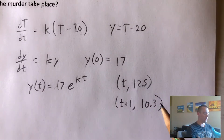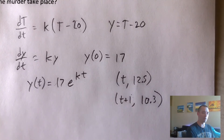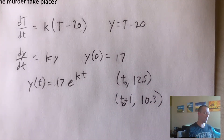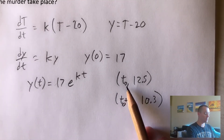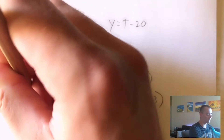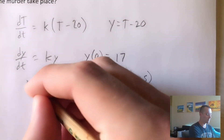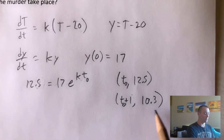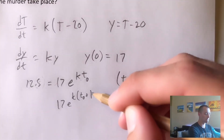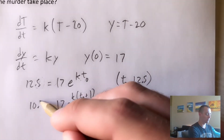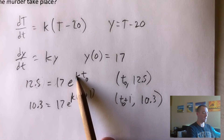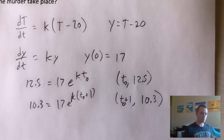Plugging each of these into Y(t) = 17e^(KT) gives us two equations. Plugging in T0 and Y equals 12.5: 12.5 equals 17e^(K·T0). Plugging in T0 plus 1 and Y equals 10.3: 10.3 equals 17e^(K·(T0+1)). We have two equations and two unknowns — K and T0 — so we should be able to solve for both. Really we just need T0, since that tells us when the murder occurred.